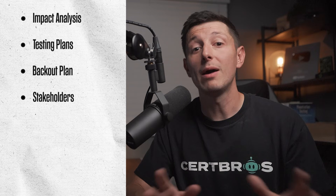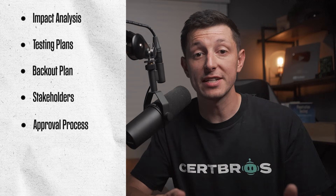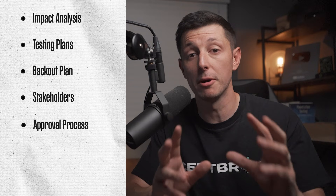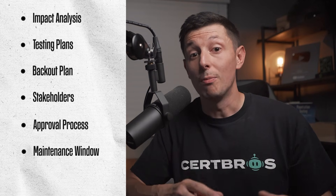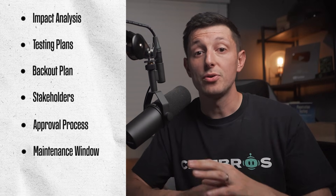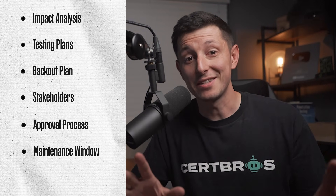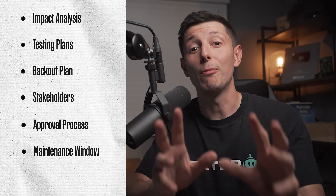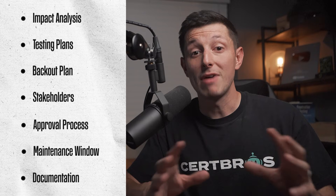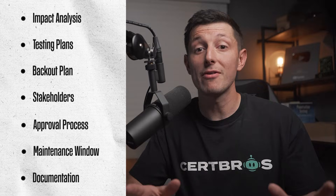A change management policy also includes a back out plan — a contingency plan to revert changes if something goes wrong during implementation. There will typically be a formal approval process to ensure all changes are reviewed and authorized by the appropriate people. Maintenance windows — predefined time frames for when changes can be made — are also very important. For example, it's common to not allow changes on a Friday to avoid problems over the weekend. Documentation, keeping detailed records of all changes, helps in auditing and tracking.